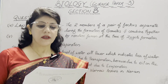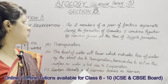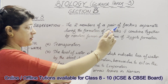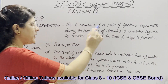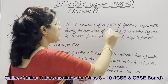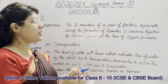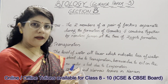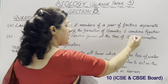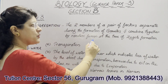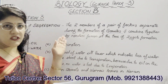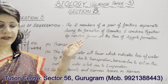Part number four is to state Mendel's Law of Segregation. The two members of a pair of factors separate during the formation of gametes. During the formation of gametes they do not blend; rather, they separate and then combine together by random fusion at the time of zygote formation. This is Mendel's Law of Segregation.